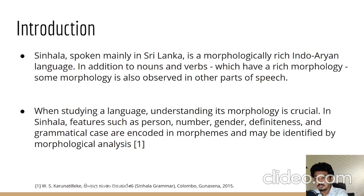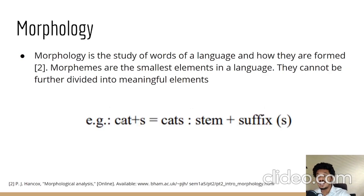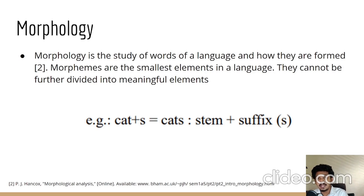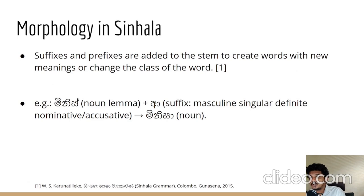Understanding morphology is crucial when studying a language. In Sinhala, features such as person, number, gender, and grammatical case are encoded in morphemes and may be identified by morphological analysis. Morphology is the study of words and how they are formed. Morphemes are the smallest elements in a language and cannot be further divided into meaningful units — for example, the stem 'cat' and suffix 's' form the word 'cats'. In Sinhala, suffixes and prefixes are added to the stem to create words with new meanings or change the word class.